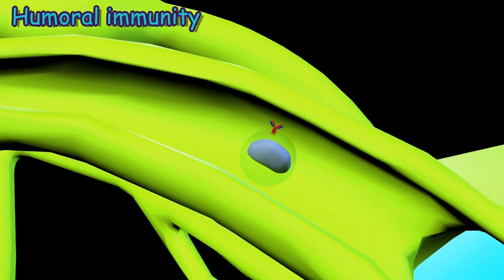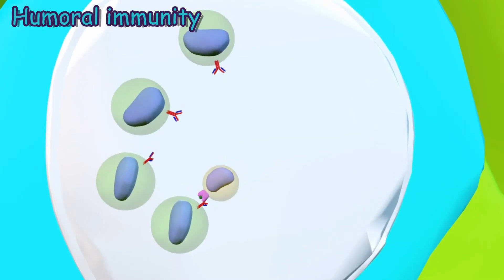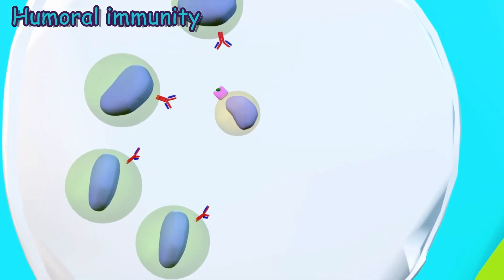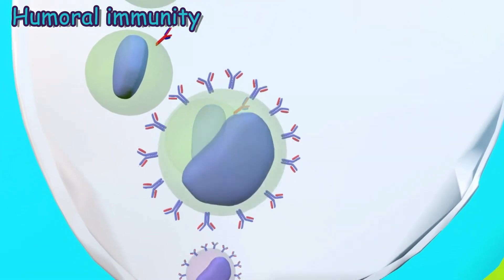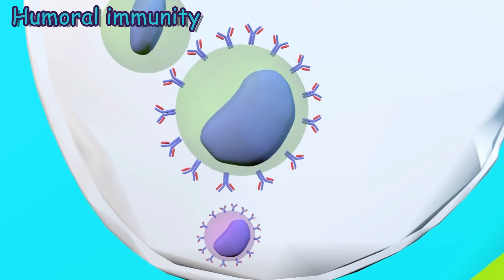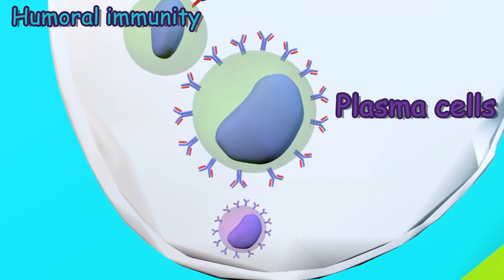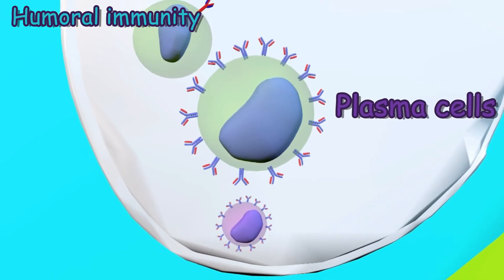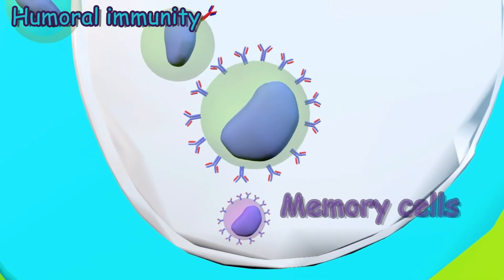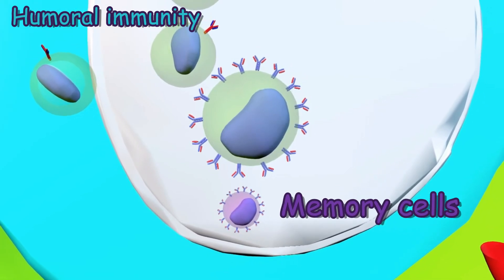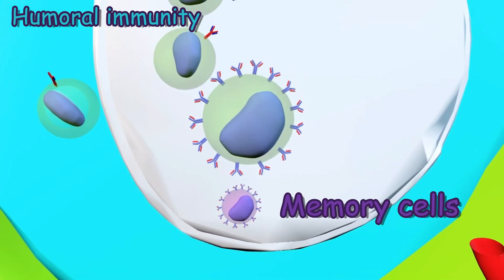The activated T helper cells enter the lymph nodes through the lymphatic system. They interact with the B cells to activate them. Once the B cells are activated, they differentiate into plasma cells, which produce antibodies against the specific antigen, and memory cells, which carry information about this type of antigen so if the body is infected by this antigen again, they can change into plasma cells to produce antibodies.